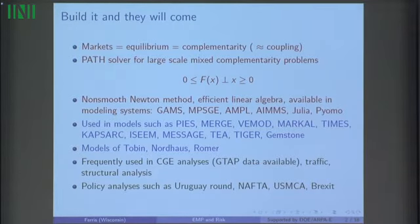I noticed also that the models of Tobin, Nordhaus and Romer for which they received their Nobel Prizes also have formulations as complementarity problems which can be solved using PATH. It's been used for Uruguay around NAFTA, for USMCA, and various civil servants in White Hall are using it to aid the discussions on Brexit.